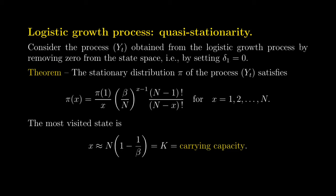By definition, this quasi-stationary distribution, which is going to describe the behavior of the process for a very long time before extinction, is in fact the stationary distribution of a new stochastic process that we call here Y_t. That's exactly the logistic growth process, but obtained by removing zero from the state space to make sure that there cannot be any extinction. And so in this video, we are going to start by proving this theorem that gives you an explicit expression of the stationary distribution of this new stochastic process Y_t.